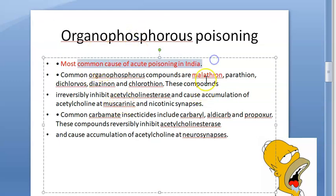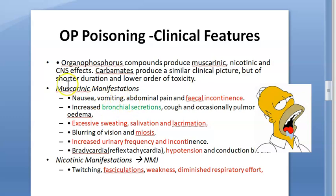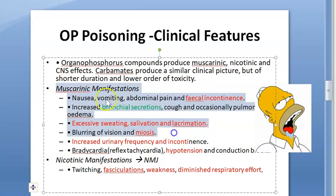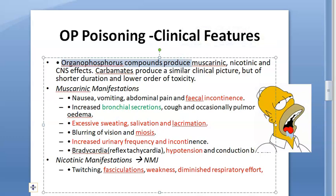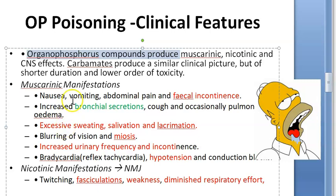Organophosphorus poisoning is the most common poisoning in India. Examples of these compounds include malathion and diazinon. Organophosphorus compounds are more toxic, while carbamates are less toxic and have a shorter duration of toxicity.